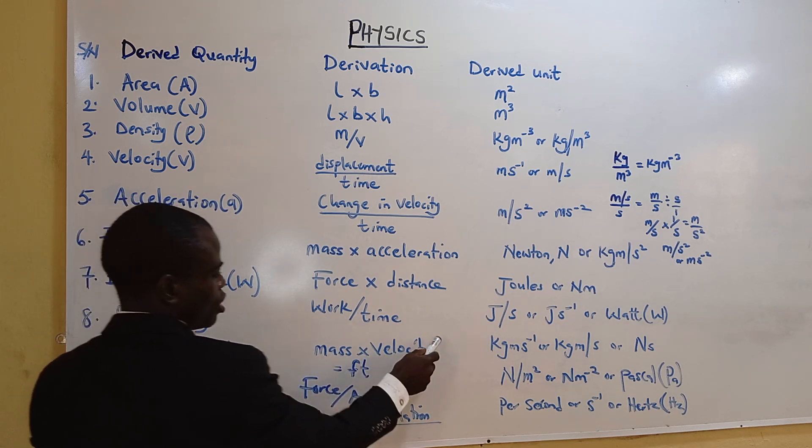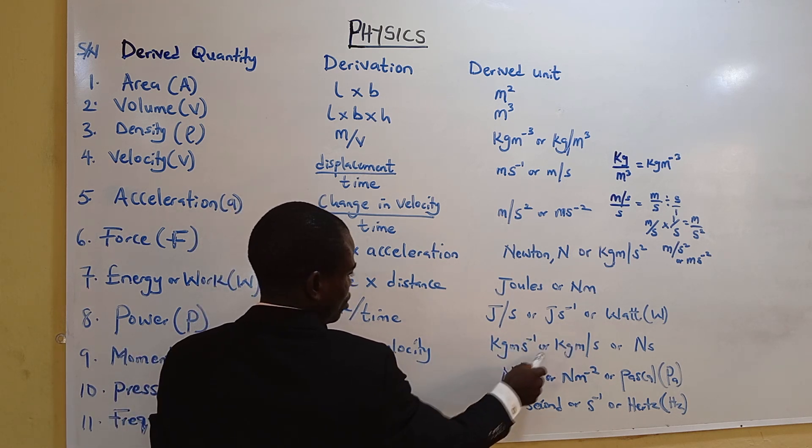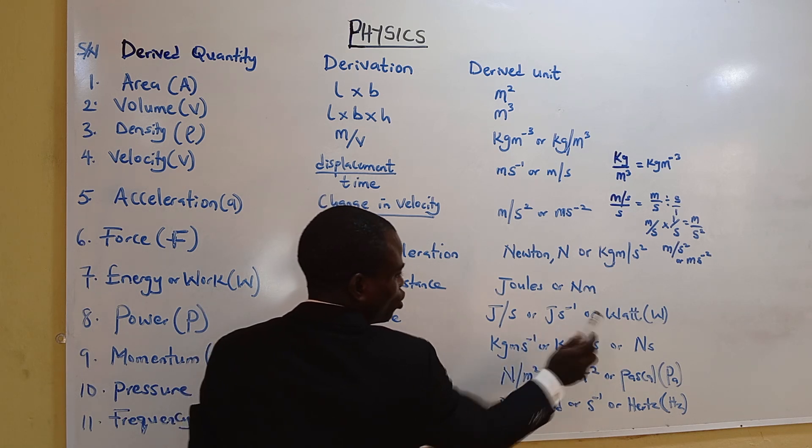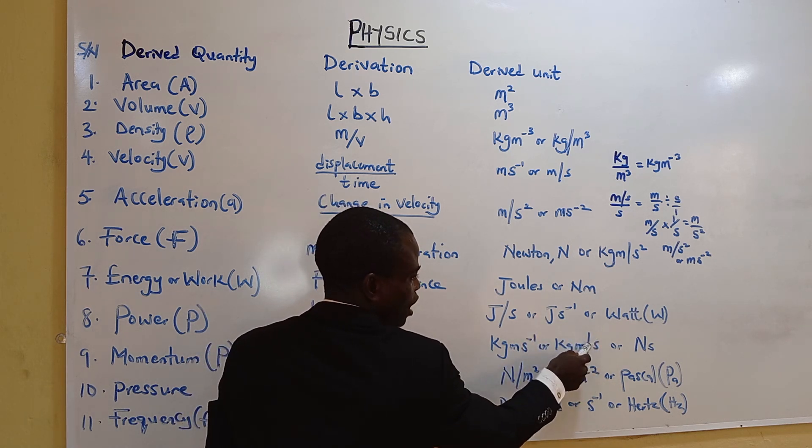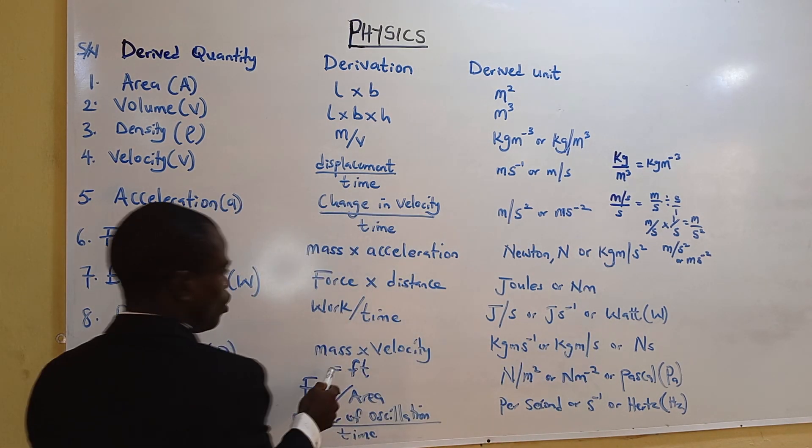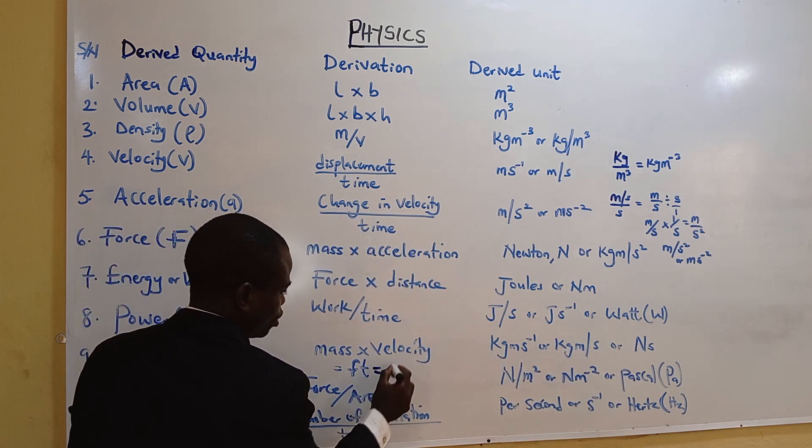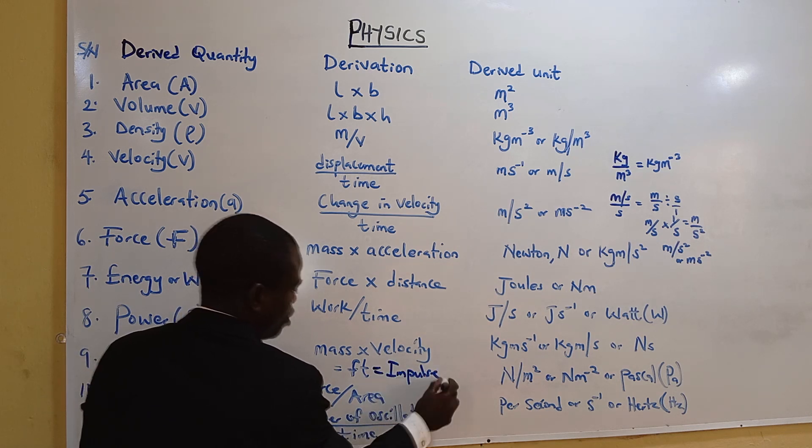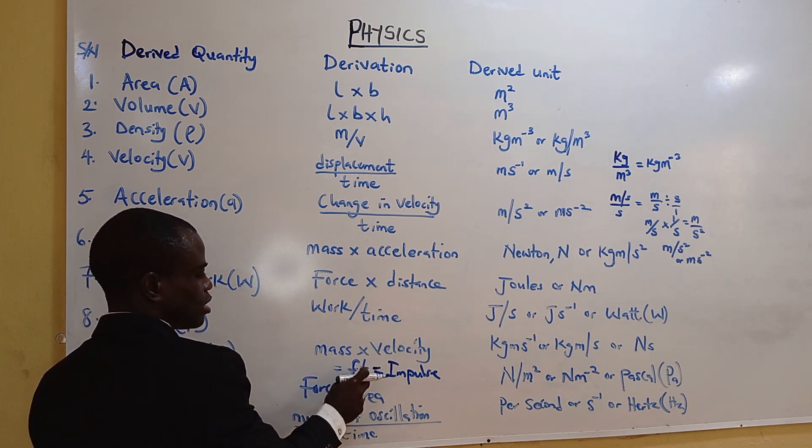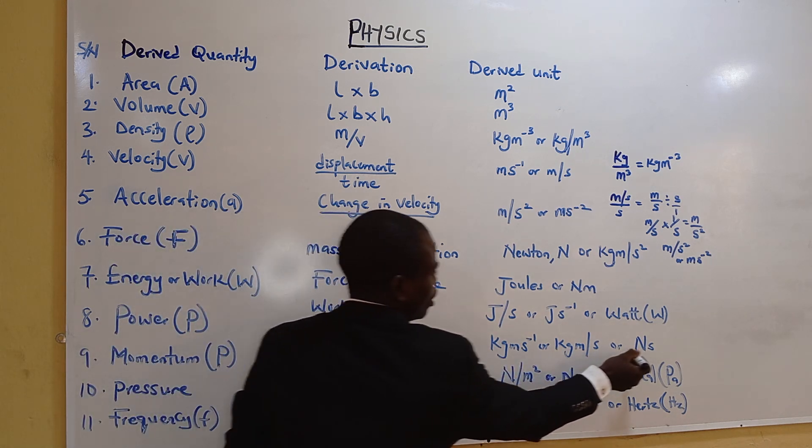Momentum is mass times velocity, which is kilogram meter per second. When you move this division between m and S, you have S to the minus one or put slash. Don't make mistake of introducing minus one and slash. It's wrong. You either pick slash or put minus one. The reason why we put newton in seconds is that this is impulse. Impulse is force times time. Momentum, mass times velocity equals force times time. Unit of force is newton, time is in seconds. Multiply them. That's why you have newton seconds.